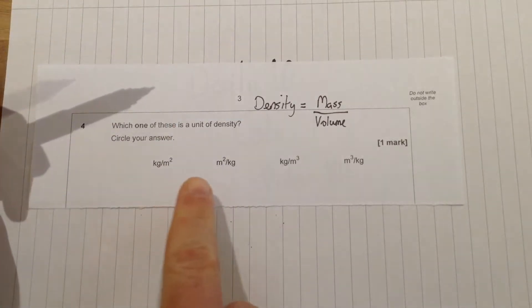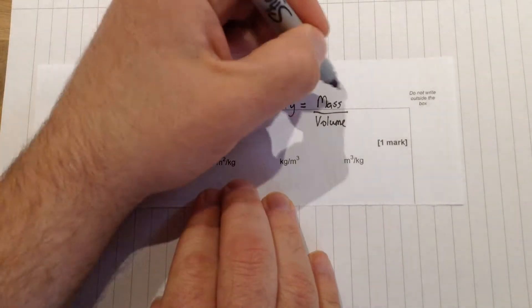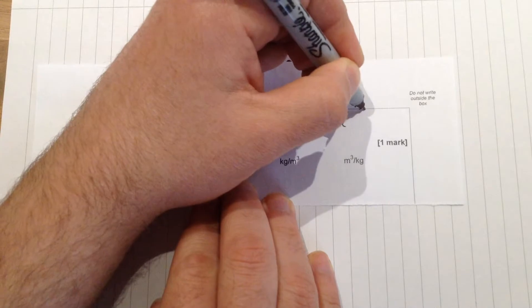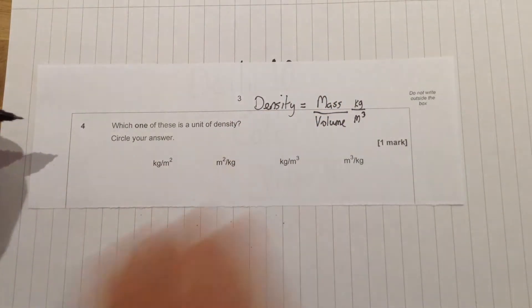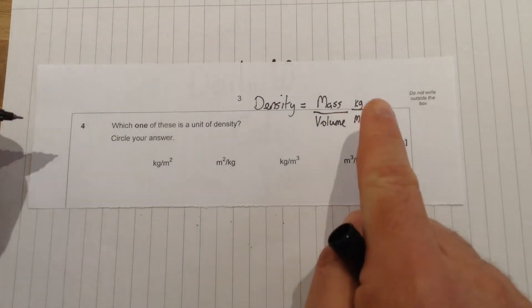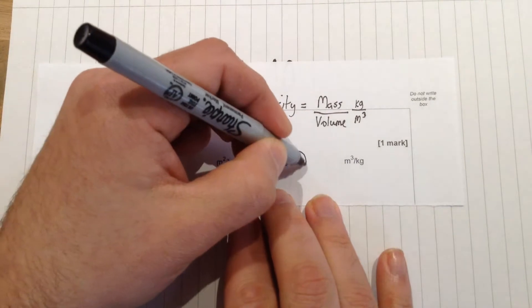Now if you think, all the ones down here are using the same sort of numbers, so mass is gonna have to be kilograms, and volume would be meters cubed because volume is to do with 3D shapes. So we need kilograms over meters cubed, which would be this one here.